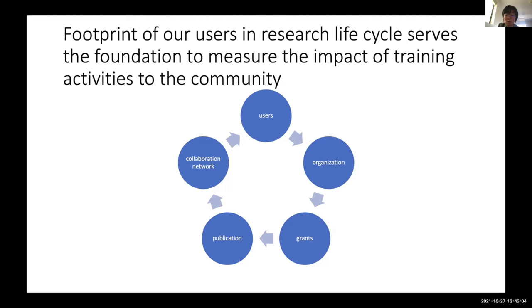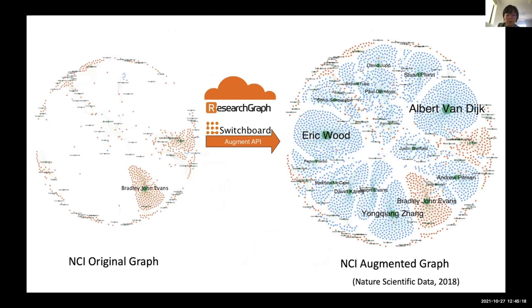Here, I use this node to represent users, organizations, grants, publications, and collaborations. Each node can be identified with a persistent identifier. I built this model early on when I was the data collection manager at NCI. We wanted to see the impact of data collections.